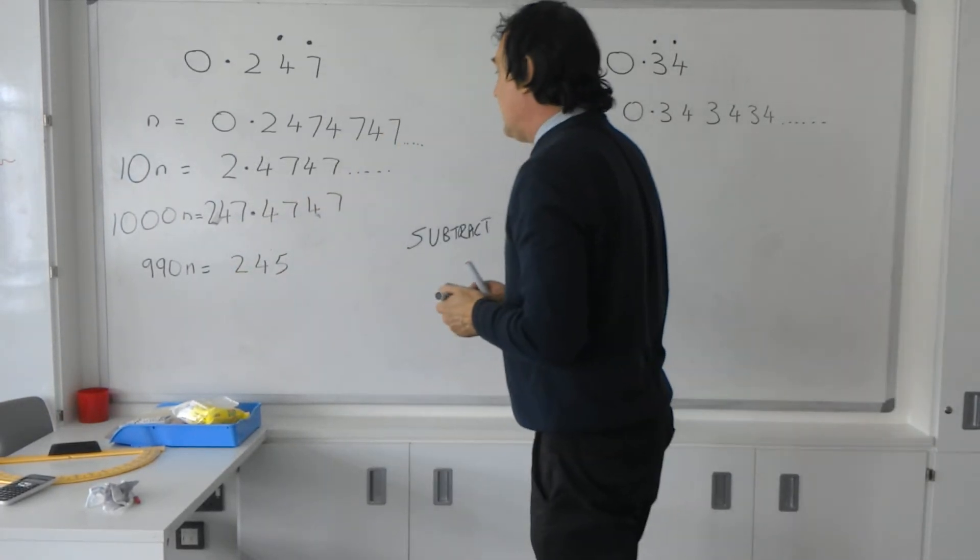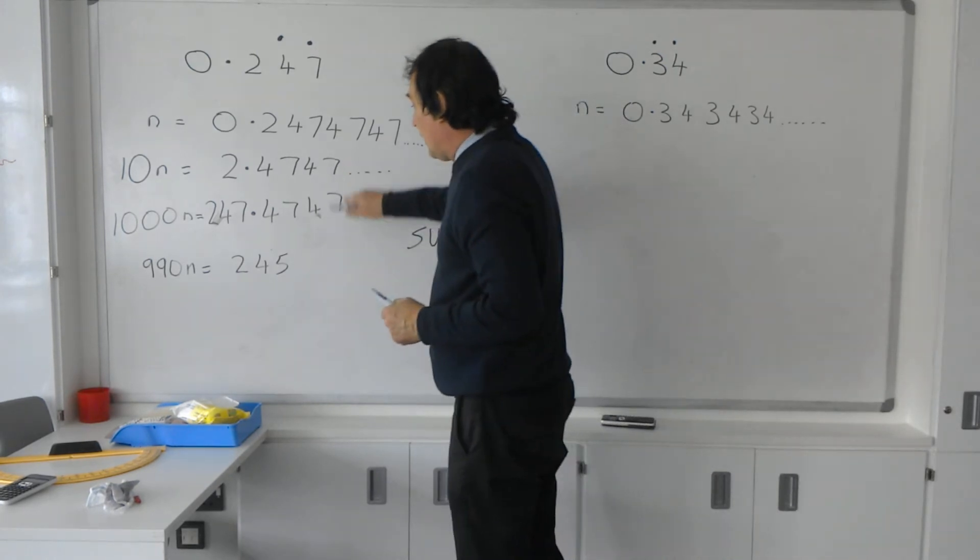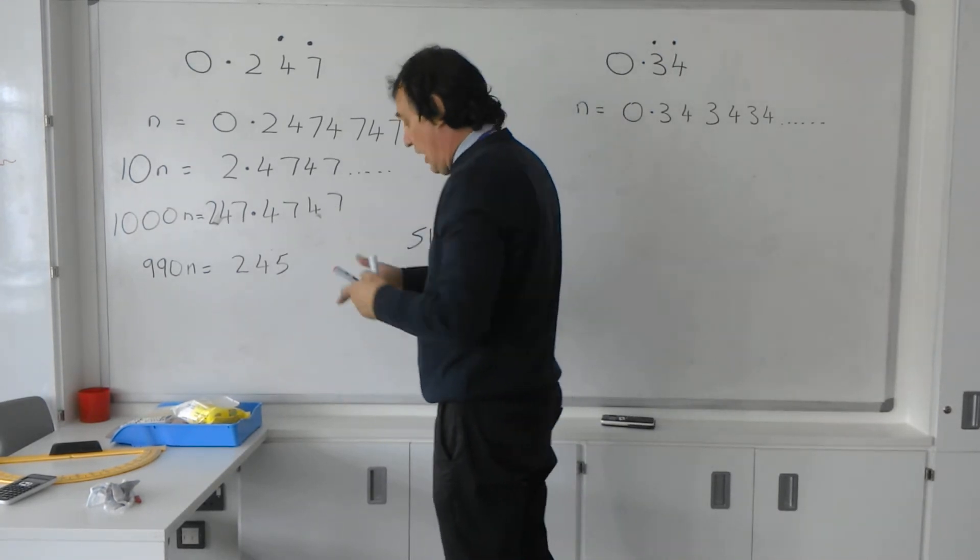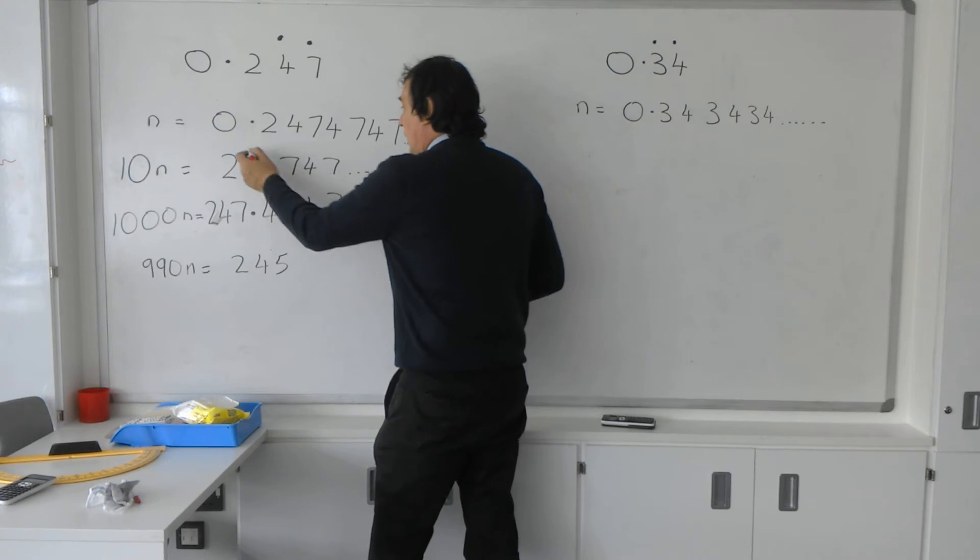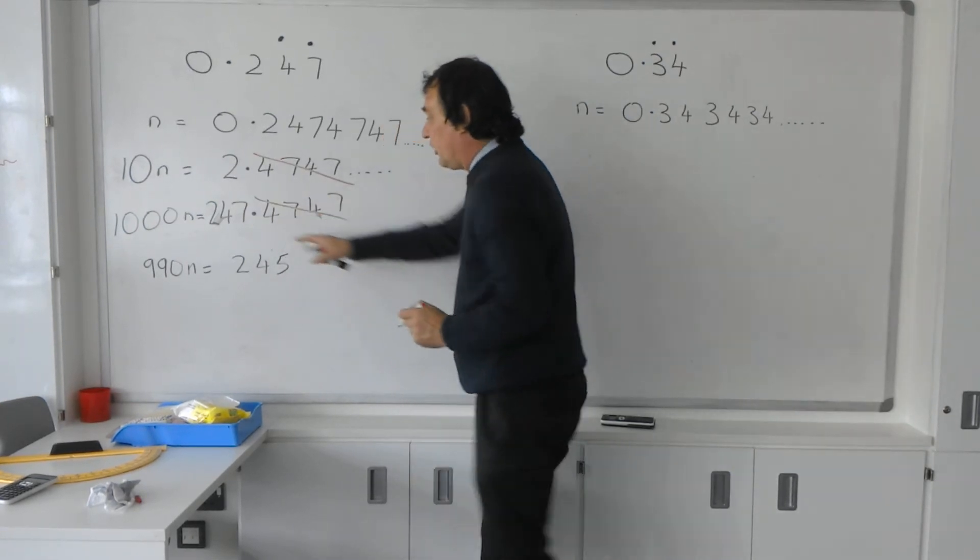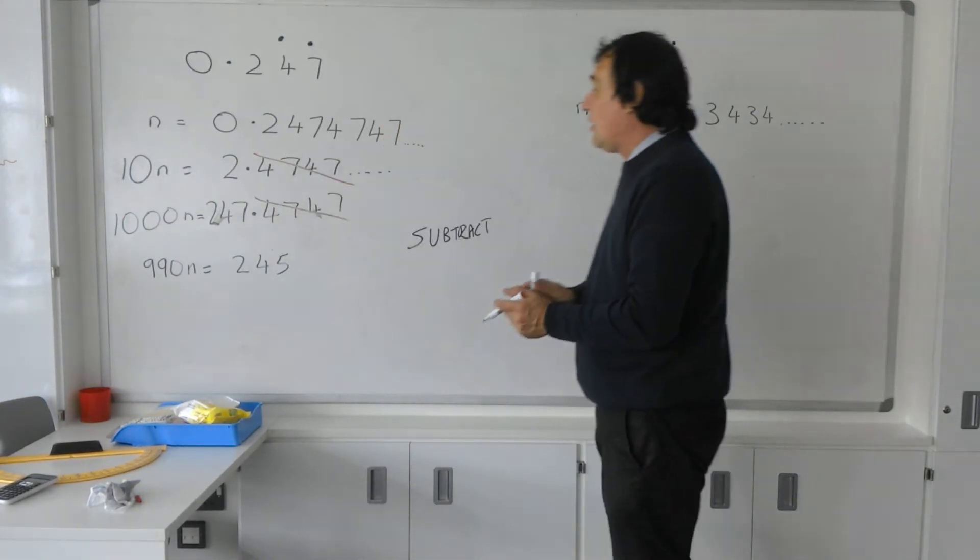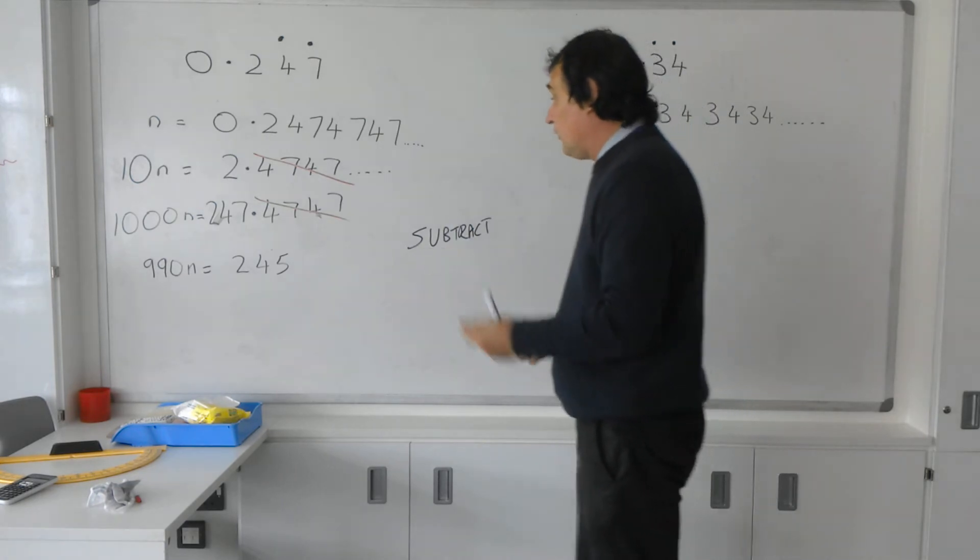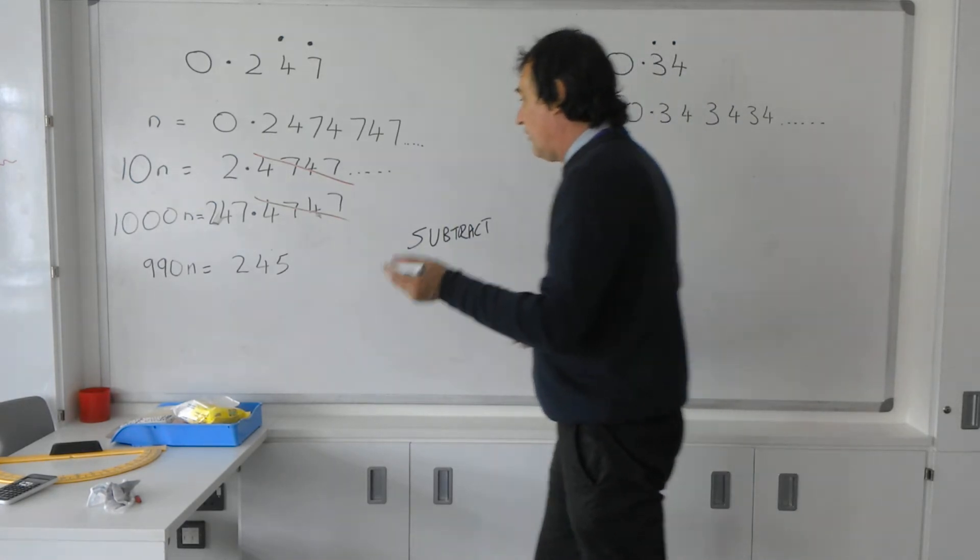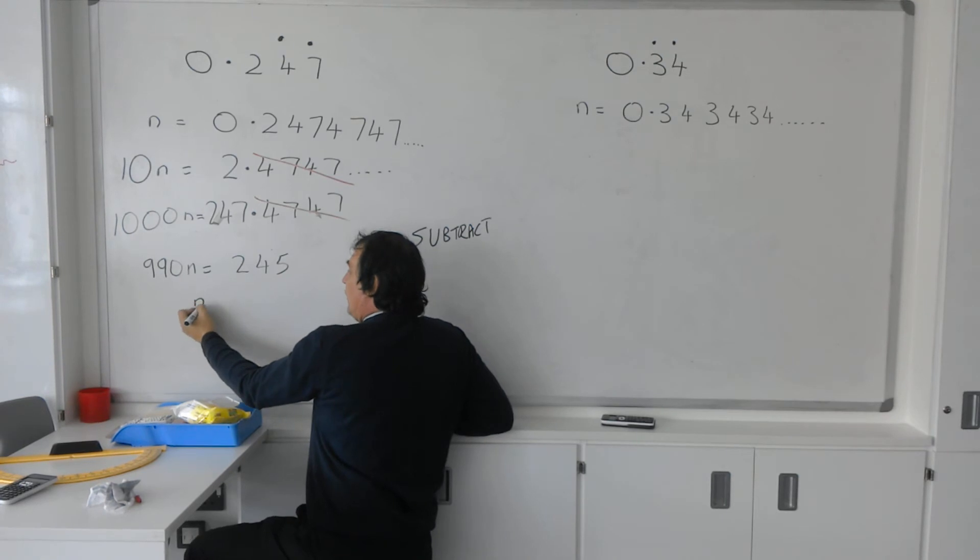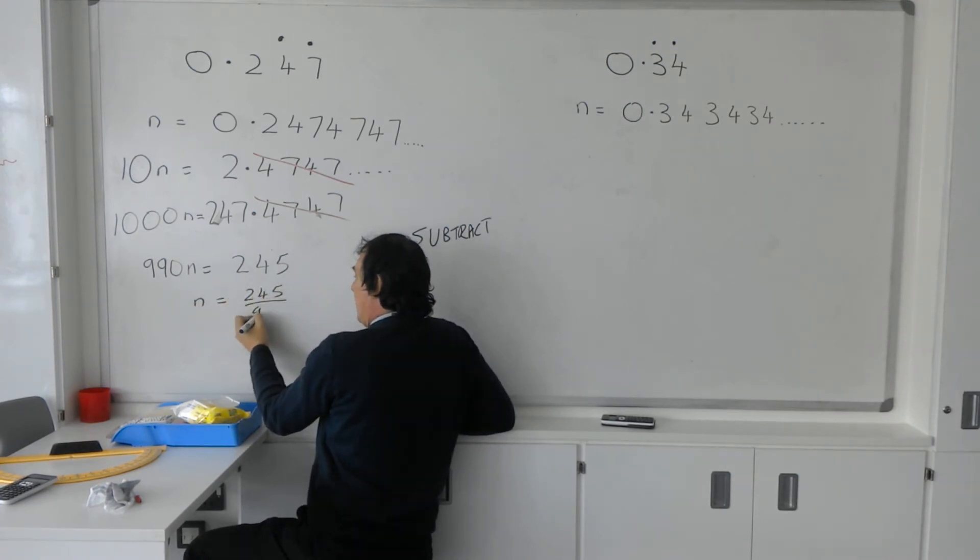Can you see now that because you've got the same recurring sequence after the decimal point straight away, they'll knock each other out. So you're just left with 247 take away 2 to give you 245. Then you can express that as a fraction, N being 245 divided by 990.